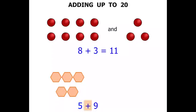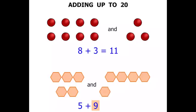Plus — in other words AND. Now we need 9. Let's drag in 9 hexagons. 1, 2, 3, 4, 5, 6, 7, 8, 9.